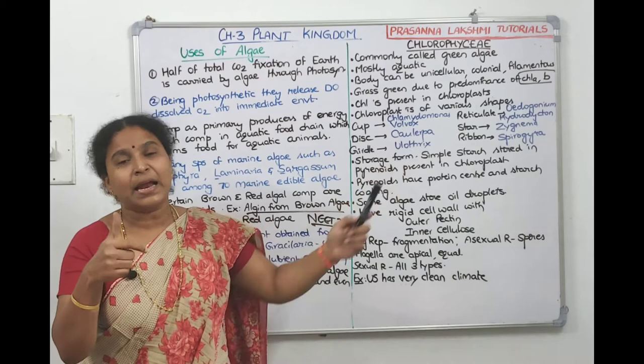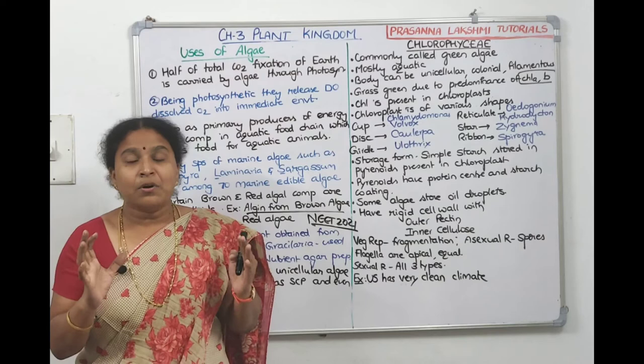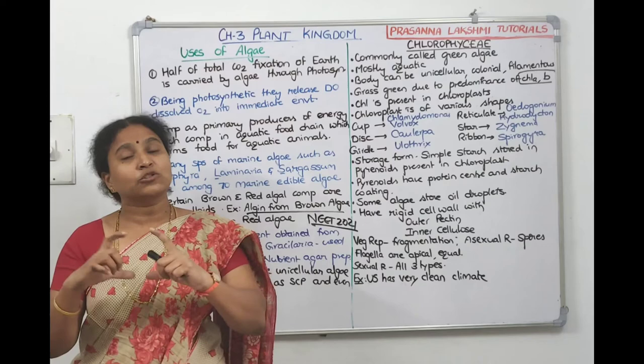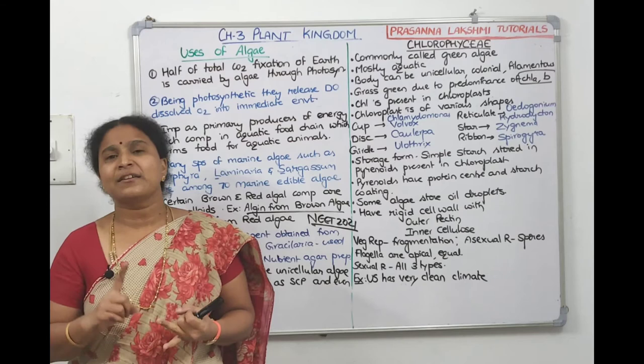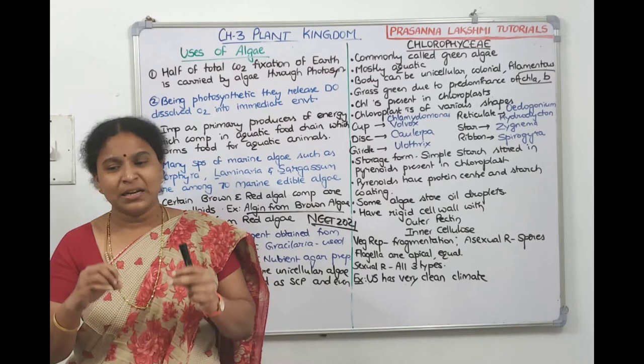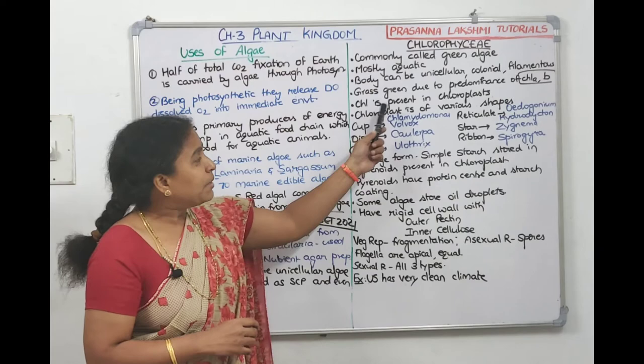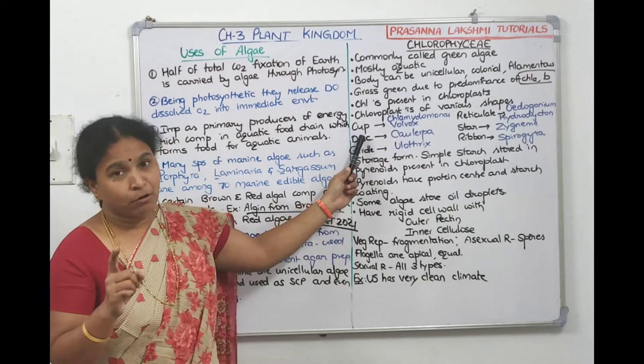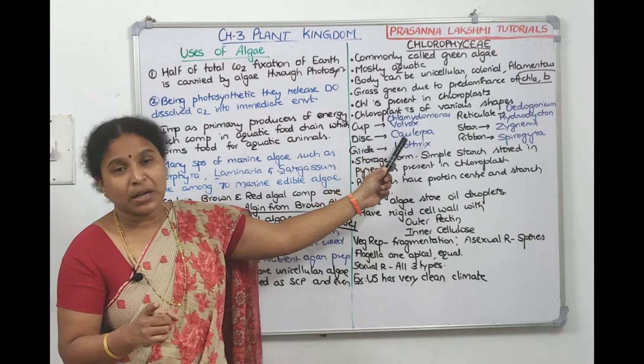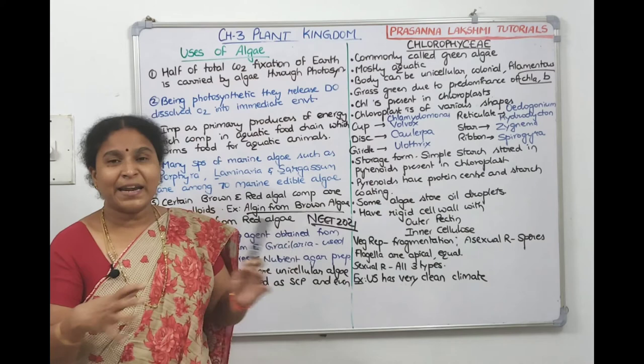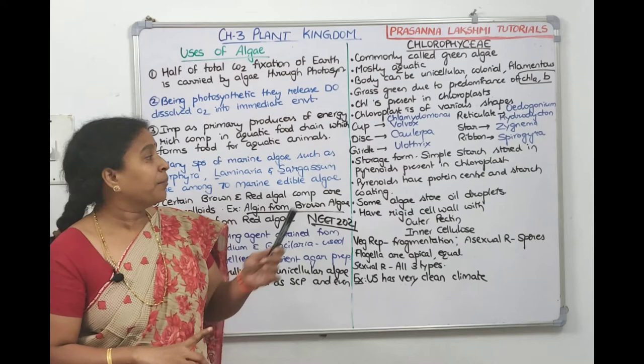In green algae, chloroplasts are of different shapes: cup-shaped (Chlamydomonas, Volvox), disc-shaped (Ulva), girdle/collar-shaped (Ulothrix), reticulate/network-shaped (Oedogonium, Hydrodictyon), star-shaped (Zygnema), and ribbon-shaped (Spirogyra). The reserve food material is simple starch, stored in special protein structures called pyrenoids inside the chloroplast. One to many pyrenoids are present per chloroplast.